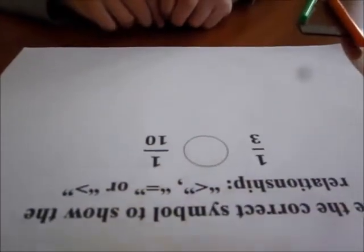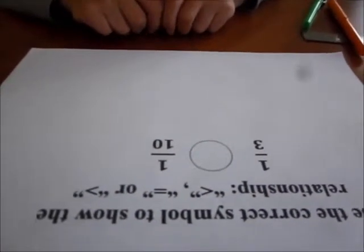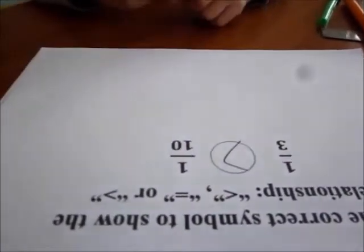If you have a cake, would you rather get one-third of the cake or one-tenth of the cake? One-third. So which is bigger? One-third. Okay, let's put the right symbol. One-third is bigger.